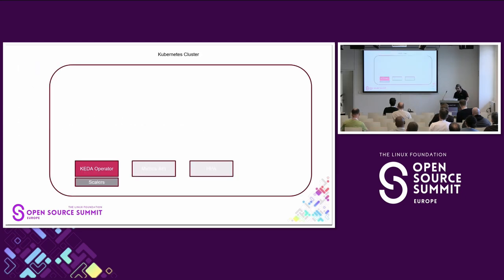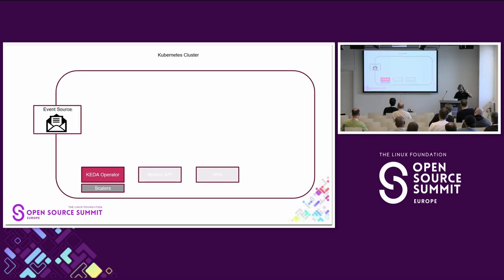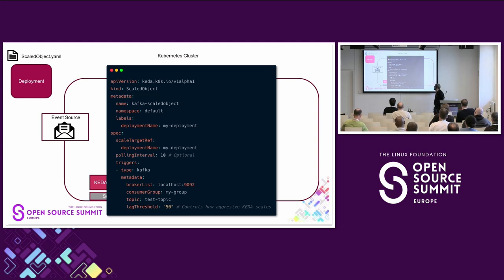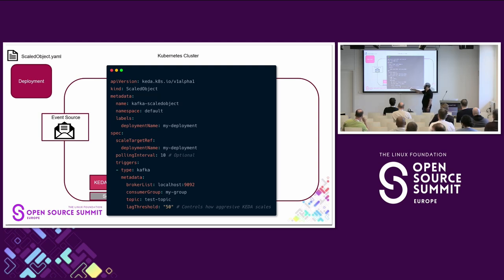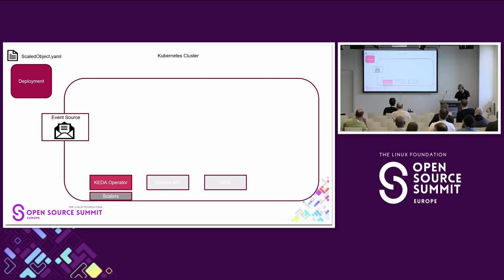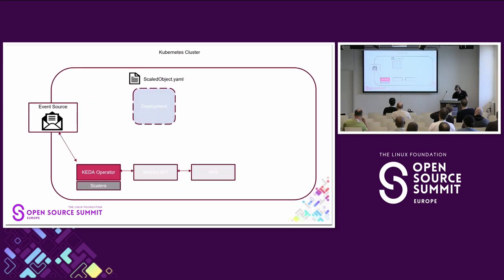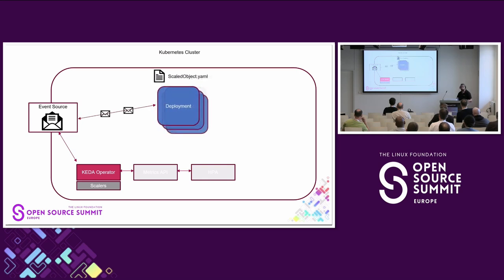Looking at how KEDA works: you have the KEDA operator, scalers, a metrics API, and HPA. You create a ScaledObject targeting a deployment (or any resource with a `/scale` sub-resource), specifying a polling interval and triggers. For example, a Kafka trigger on a specific consumer group and topic with a lag threshold of 50 controls how aggressively KEDA scales based on message count.